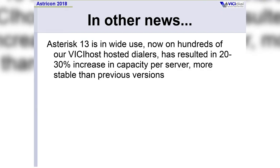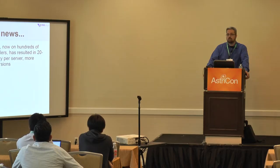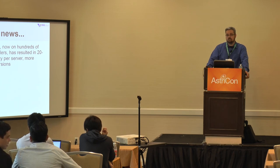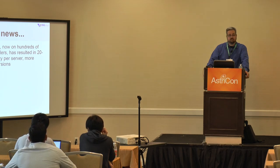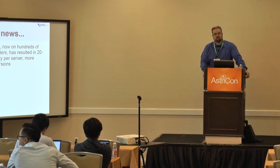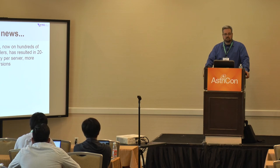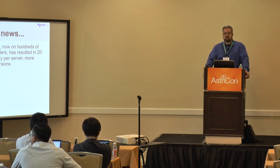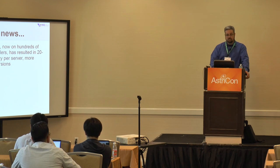In other news, we have Asterisk 13 now deployed to pretty much our whole VICIhost infrastructure of hundreds of dialers. It is incredibly stable — we use 13.21.2 — and it has resulted in a 20 to 30 percent increase in capacity per server over Asterisk 11, which is massive. If you saw last year's presentation, we had some headaches integrating with Asterisk 13 because they got rid of local channel resolution. But it turns out local channel resolution was a huge resource hog, which is why Asterisk 13 runs so much more efficiently. Once we figured out how to mitigate the problem of local channels no longer resolving, we were able to take full advantage of the performance enhancements.